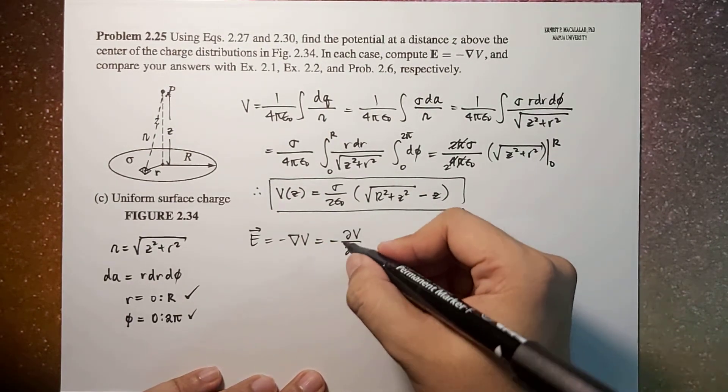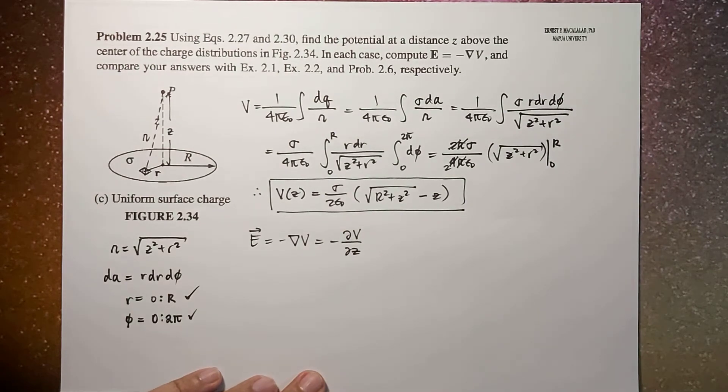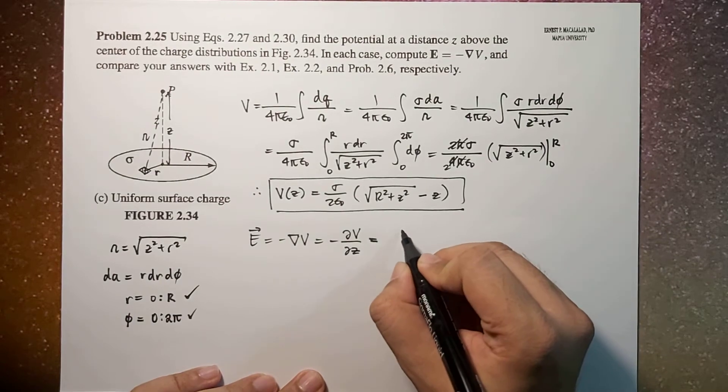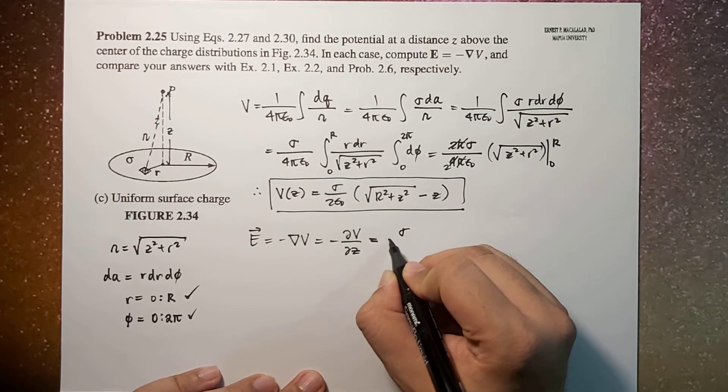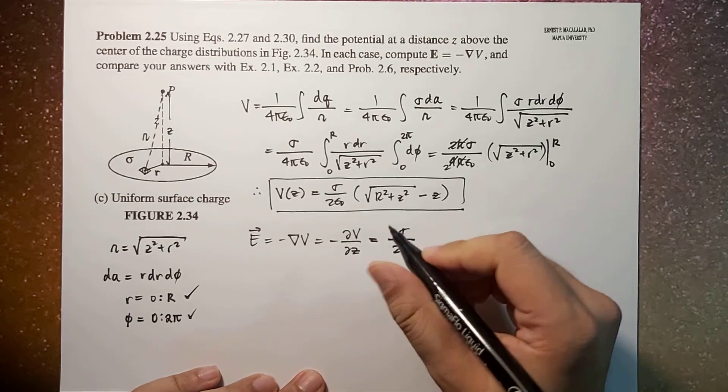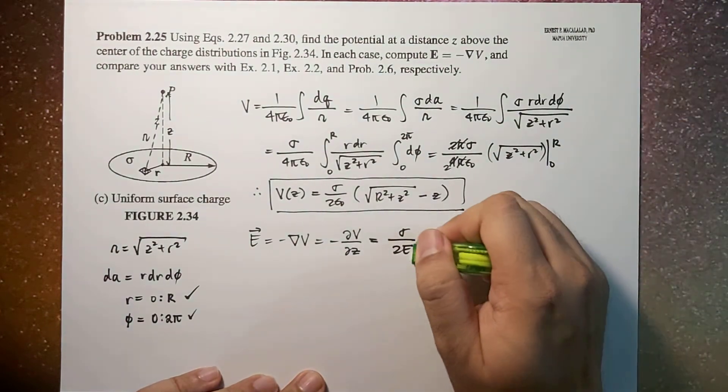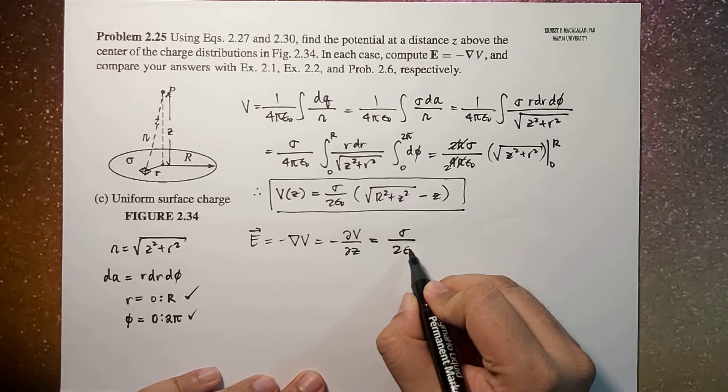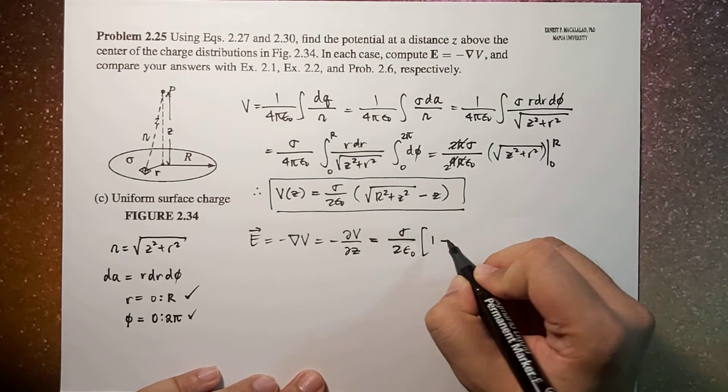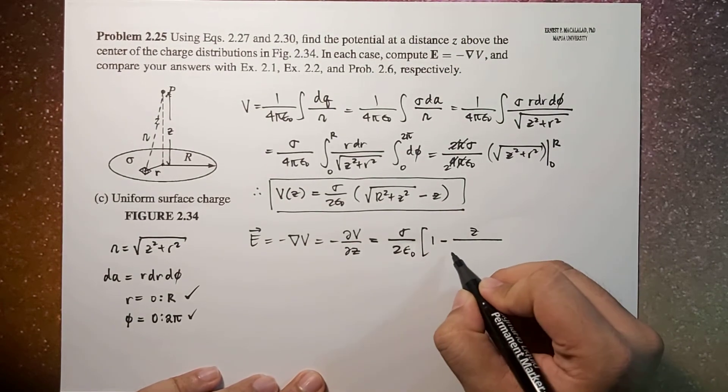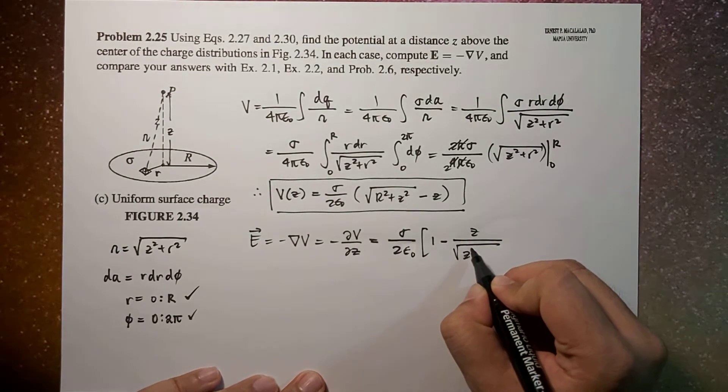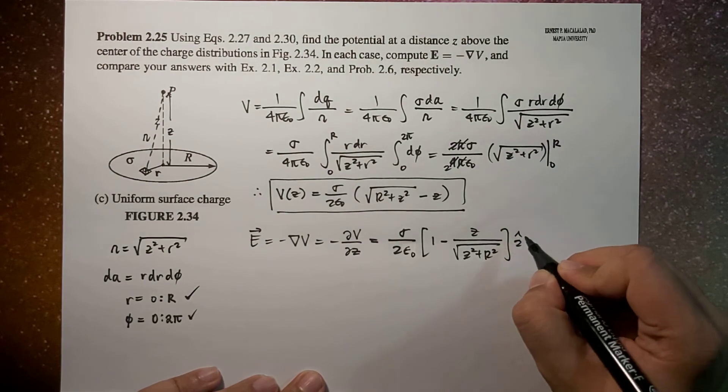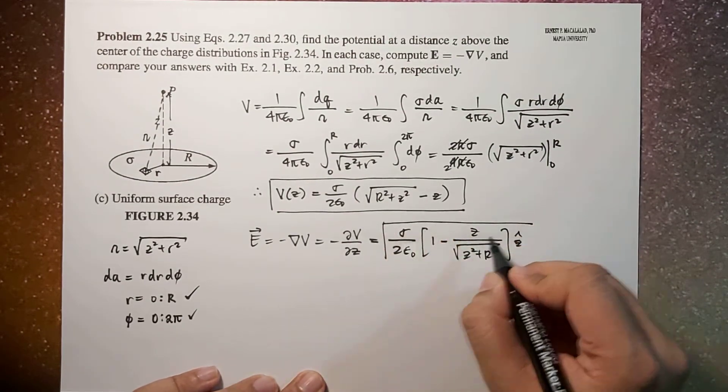You can do the differentiation later, which is equal to sigma over 2 epsilon naught times 1 minus z over square root of z squared plus capital R squared z hat, which should be in agreement with problem 2.6.